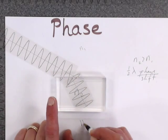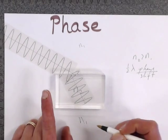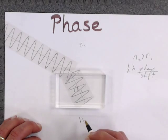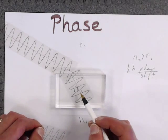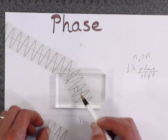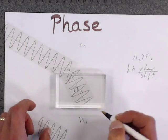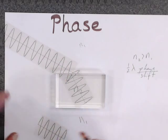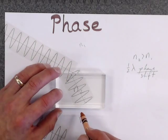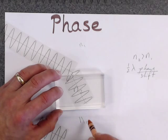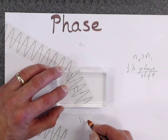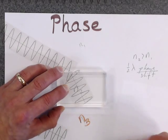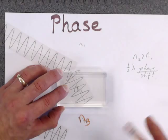And then I'm going to bounce off this bottom boundary again. So now I've got this reflection that's happening here. N2 again is greater than N1. So actually, let's change this to N3. And in my situation here, N1 and N3 are the same.